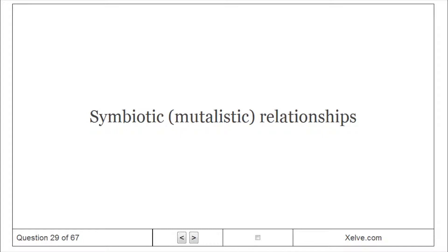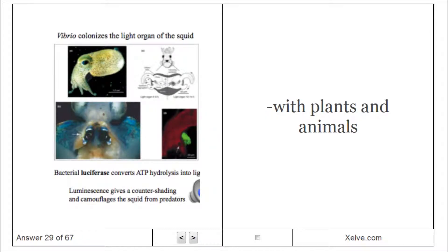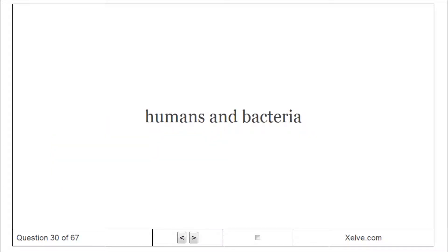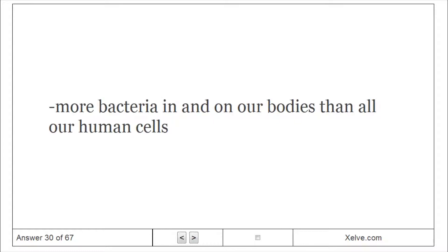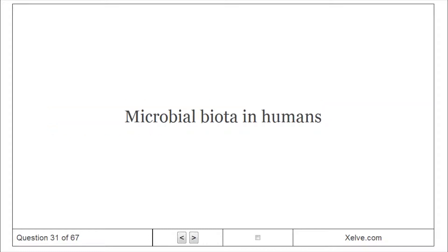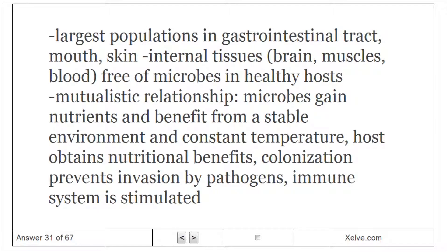Symbiotic relationships with plants and animals: humans have more bacteria in and on their bodies than all human cells combined. The largest microbial populations are in the gastrointestinal tract, mouth, and skin; internal tissues, brain, muscles, and blood are free of microbes in healthy hosts. This is a mutualistic relationship: microbes gain nutrients and benefit from stable temperature, while the host obtains nutritional benefits. Colonization prevents invasion by pathogens, and the immune system is stimulated.